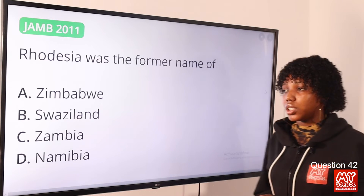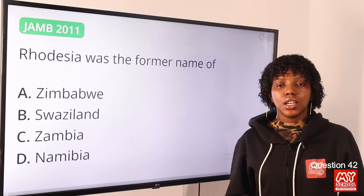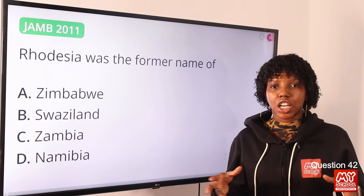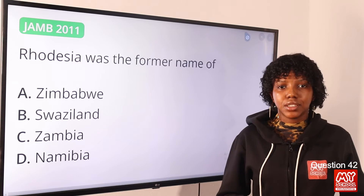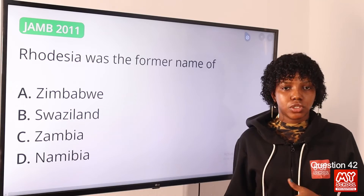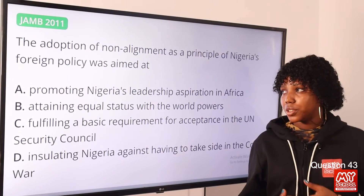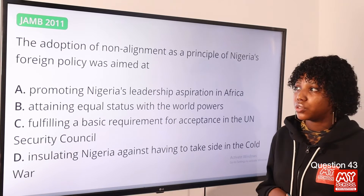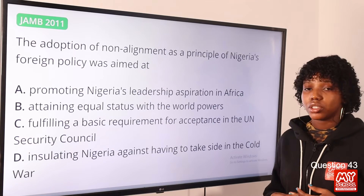Question 42: Rhodesia was the former name of — the answer is option A, Zimbabwe. In 1960, the African nationalist political organization agreed that the country should use the name Zimbabwe instead of Rhodesia. The answer is option A, Zimbabwe.